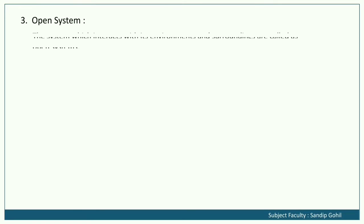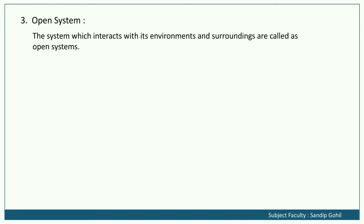Open systems: A system which interacts with its environment is called an open system. An open system can interact with its surrounding environment. For example, libraries, businesses, banks, colleges, etc. are open systems.